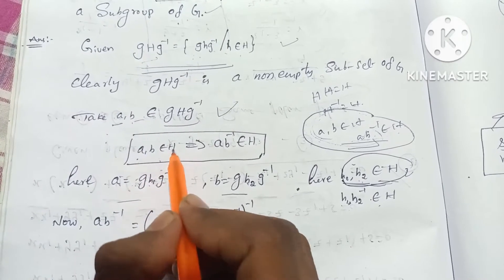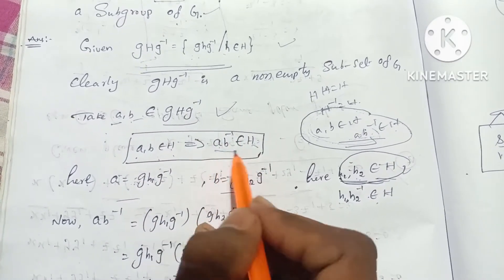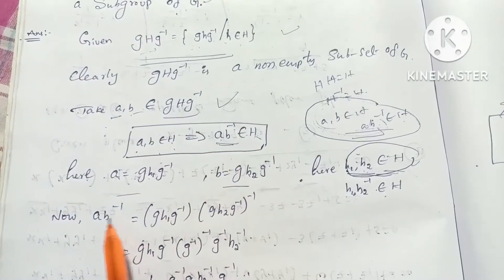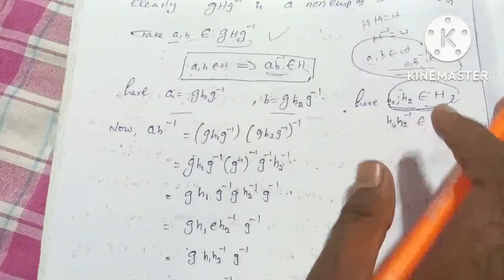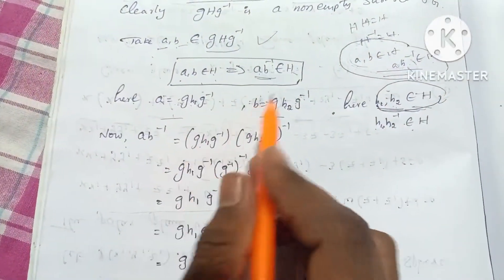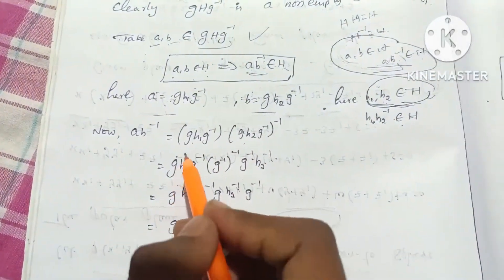So now, A·B belongs to H and A·B⁻¹ belongs to H. We will prove this value. Now A·B⁻¹ is equal to A value times B value inverse inverse.